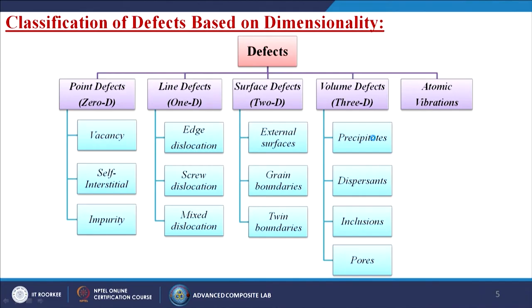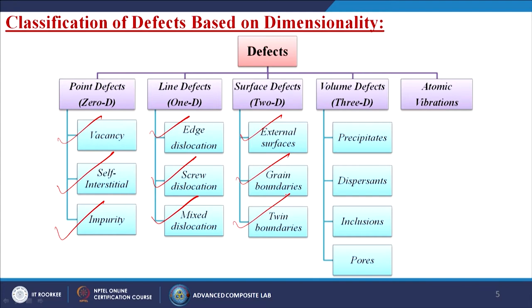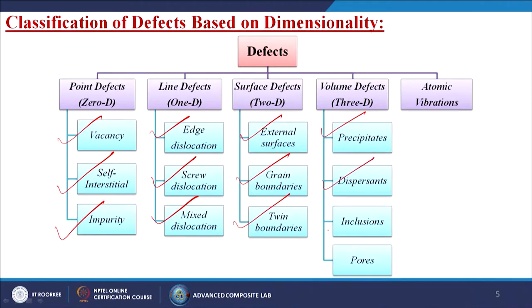The broad classification of defects is based on dimensionality. First are point defects or 0D defects: vacancy, self-interstitial, and impurity. Second are 1D or line defects: edge dislocations, screw dislocations, and mixed dislocations. Third are 2D surface defects: external surfaces, grain boundaries, and twin boundaries. Fourth are 3D volume defects: precipitates, dispersants, inclusions, and pores. The fifth type is atomic vibrations.